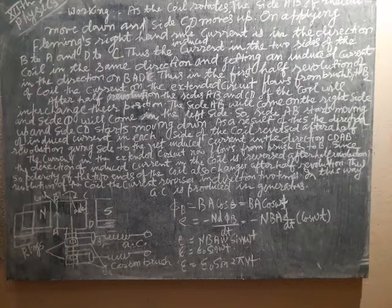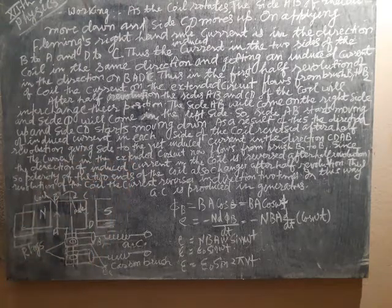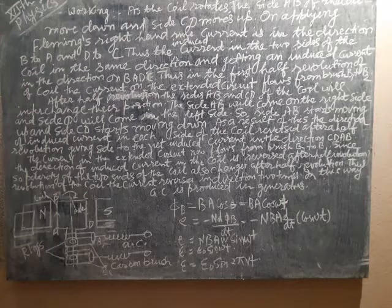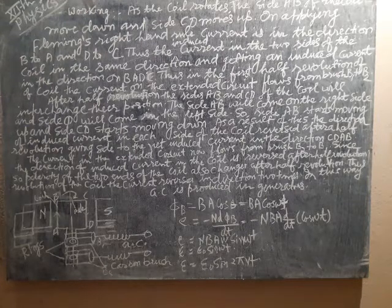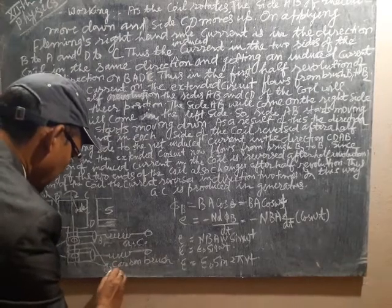After half revolution, the sides AB and CD of the coil interchange their position. In one half AB goes down, and in the next half CD goes down. Side AB comes to the right side and side CD comes to the left side. Side AB starts moving up and side CD starts moving down. As a result, the direction of induced current in each side of the coil reverses, giving net induced current in the direction CDAB. The current in the external circuit now flows from brush B2 to B1.